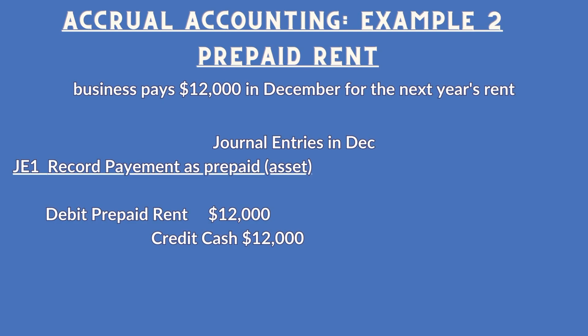Second example: prepaid rent. When a business pays in December for the next year's rent, it is making a prepayment for a future expense. This transaction is handled in two parts to adhere to accrual accounting and the matching principle. In December, when the payment is made, you debit prepaid rent for $12,000 and credit cash for $12,000. This decreases the cash account and increases the prepaid rent asset account, reflecting the advance payment and the future economic benefit — namely the use of the rental space for the next 12 months.